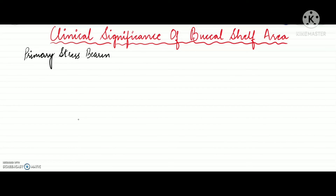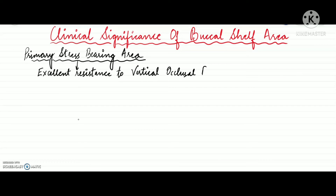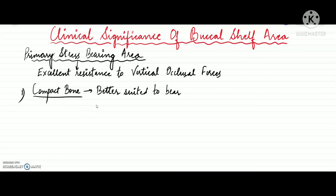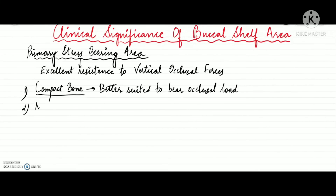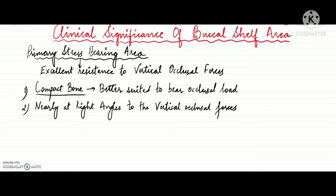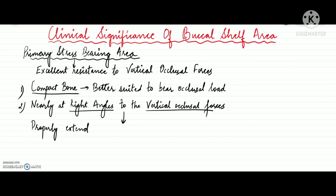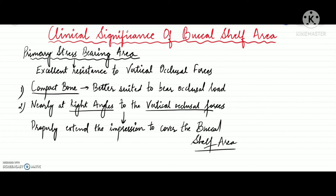The buccal shelf area is considered a primary stress-bearing area because it offers excellent resistance to vertical occlusal forces. It is an area of compact bone, which is better suited to bear occlusal load compared to cancellous bone, and it is nearly horizontal — present at right angles to the vertical occlusal forces. Hence it is capable of bearing stresses. Therefore, it is advisable to properly extend the mandibular impression to cover the buccal shelf area, which is critical for the success of the denture.